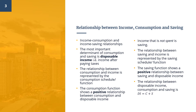The relationship between consumption and disposable income is represented by the consumption schedule or consumption function, which shows a positive or direct relationship between consumption and disposable income. Similarly, the relationship between saving and disposable income is represented by the saving schedule or saving function. Therefore, the relationship between disposable income, consumption, and saving is: DI = C + S.